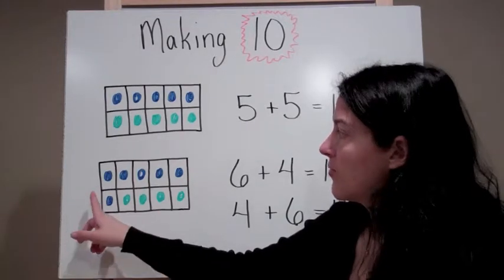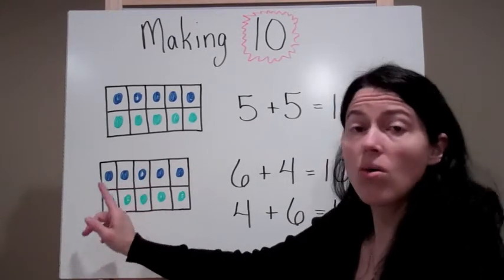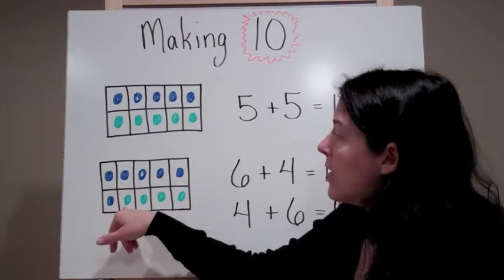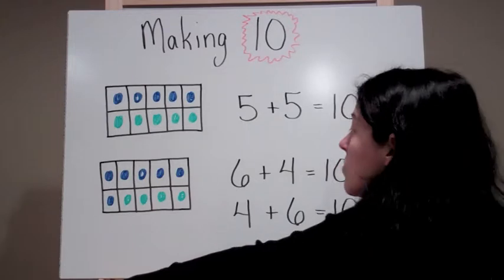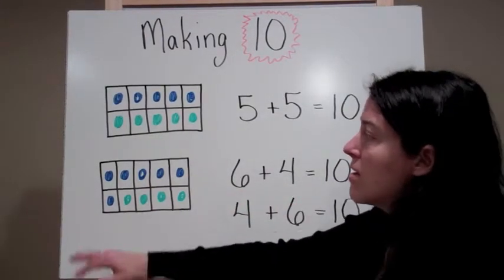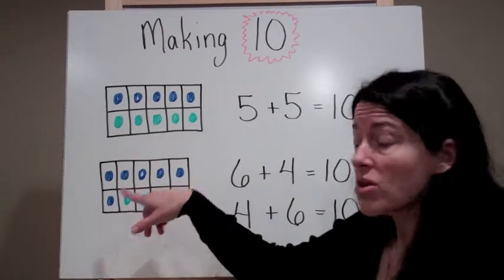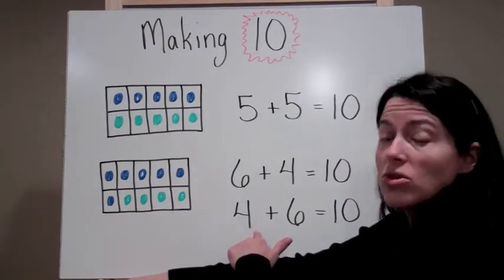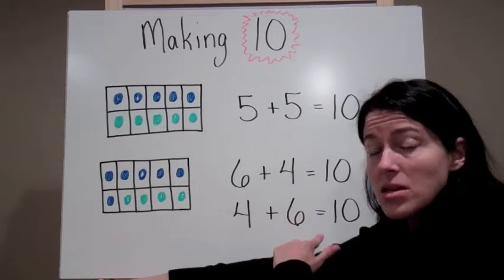So here's the next tens frame. I have a complete row of 5 and one more which equals 6. And then it is completely full with green. So I have 6 plus 4 equals 10. Now that's if I look at it this direction. But if I looked at it this direction, I also have the equation 4 plus 6 equals 10.